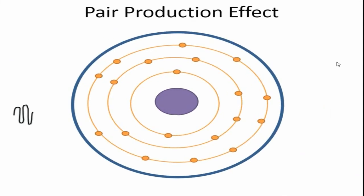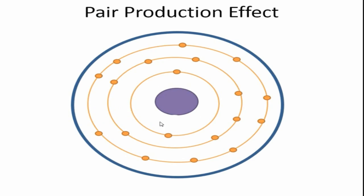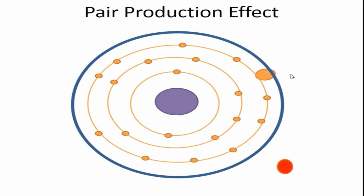Hello friends, in this video tutorial I will be teaching you about the pair production effect in detail. In this animation you will see a photon which will interact with the electromagnetic field of the nucleus. After interacting with the electromagnetic field of the nucleus, the energy is converted into mass — one particle is an electron and another is a positron.